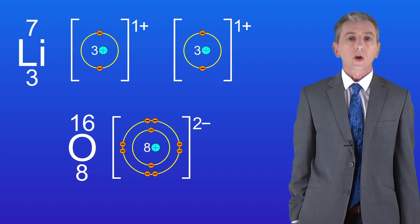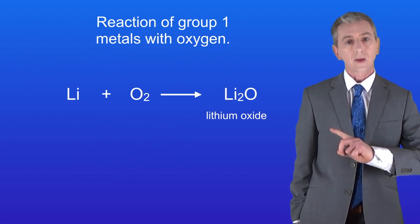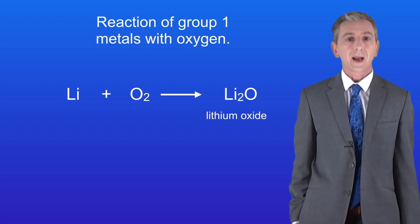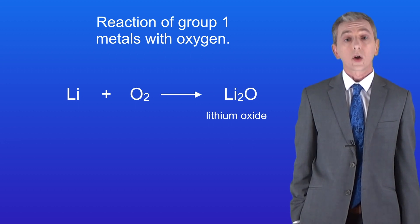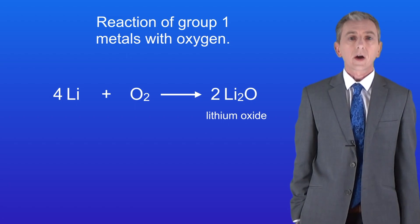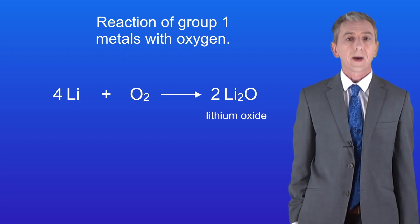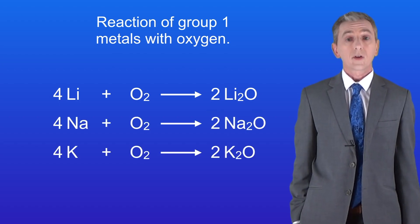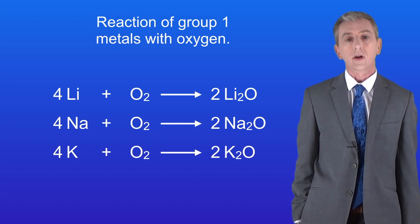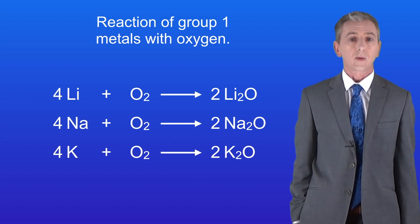We can write the equation for the reaction between lithium and oxygen. Remember that oxygen molecules contain two oxygen atoms, so we have to balance the equation by inserting large numbers. We can write equivalent equations for other Group 1 metals simply by changing the symbol for the element — here are the equations for sodium and potassium as well. Because all of the Group 1 metals have got one outer electron, they all react with oxygen in the same way.